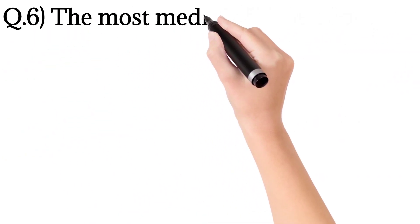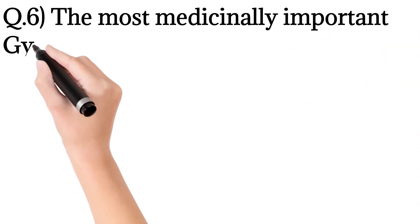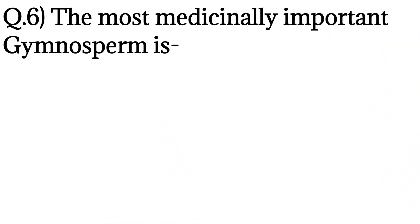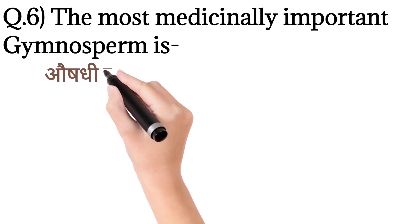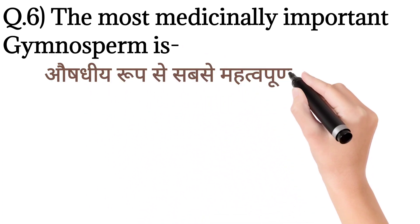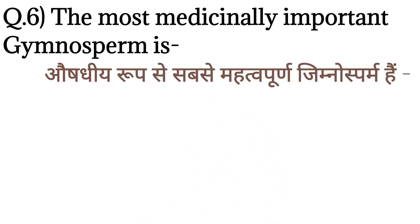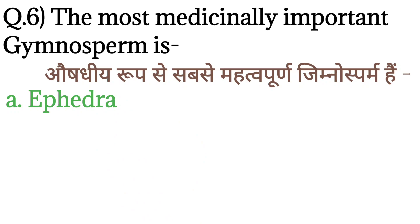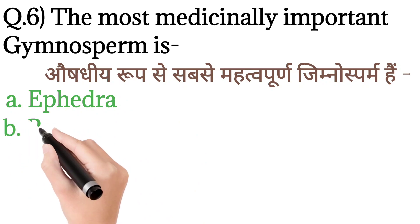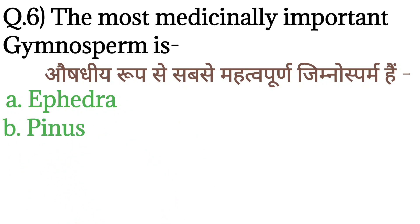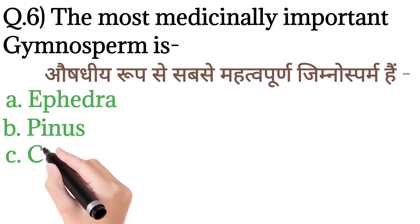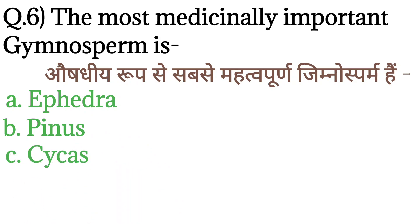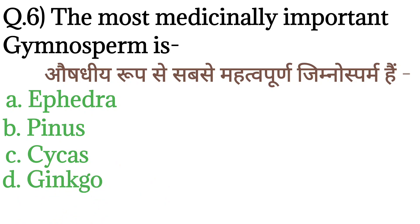Question number 6: The most medicinally important gymnosperm is — aoshadiya roop se sabse mahatvapurna gymnosperm koun hota hai? Option A: Ephedra. Option B: Pinus. Option C: Cycas. And option D: Ginkgo.